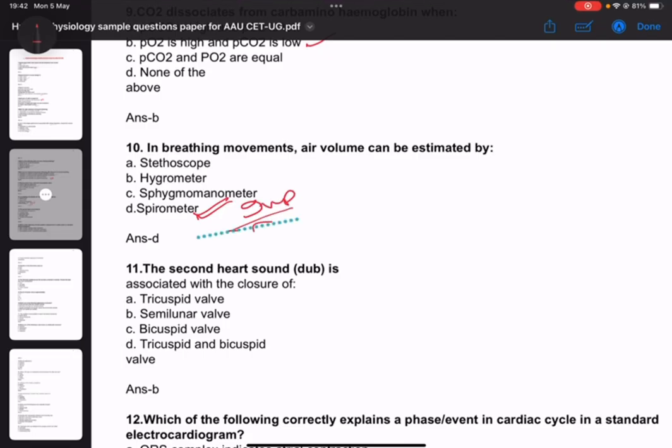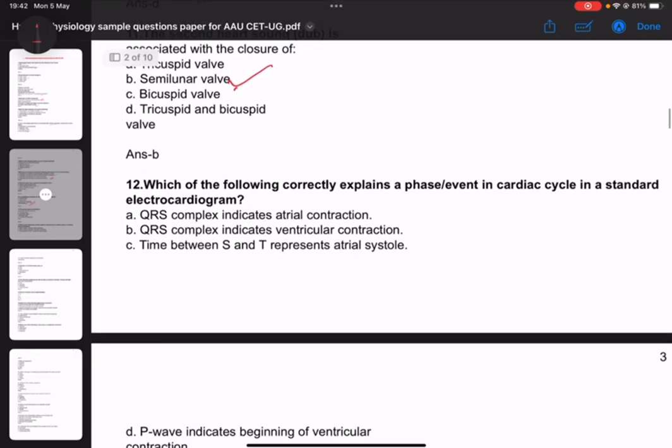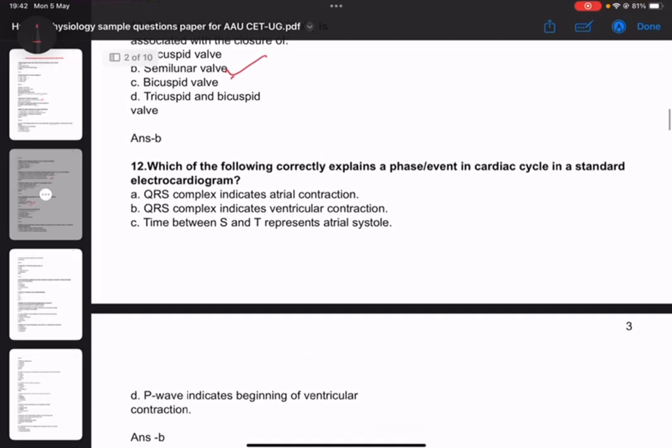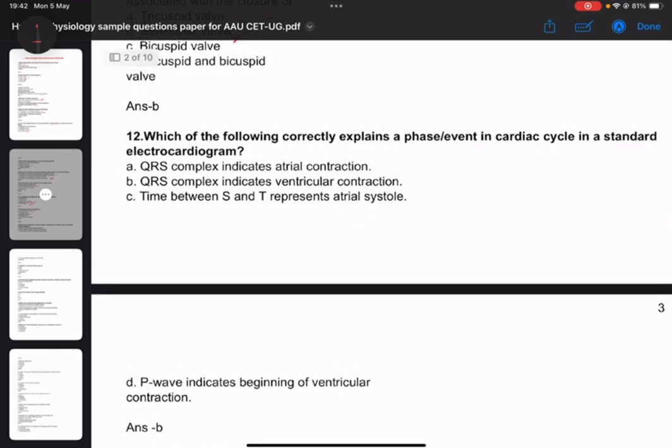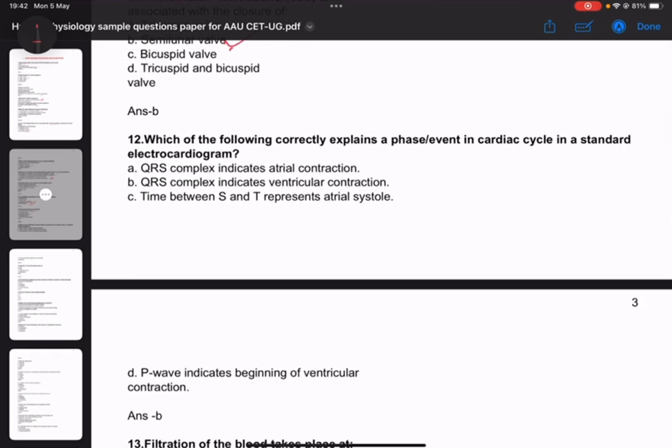Question eleven: The second heart sound is due to semilunar valve closure. Question twelve: Which of the following correctly explains a phase in cardiac cycle - in a standard electrocardiogram, the QRS complex represents ventricular depolarization. Question thirteen about hemoglobin.